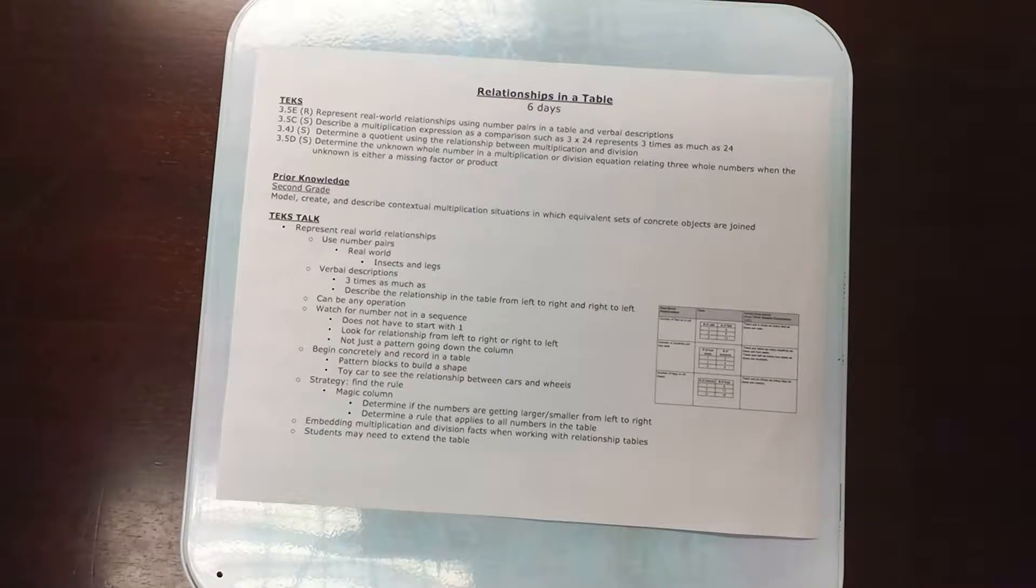As we're doing relationships in a table we can also be working on 3.4 J and 3.5 D where we understand that relationship between multiplication and division and we're finding an unknown whole number whether it's a missing factor, missing product, in a multiplication or division equation.